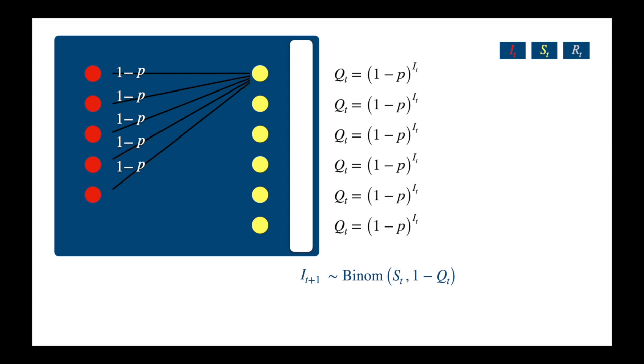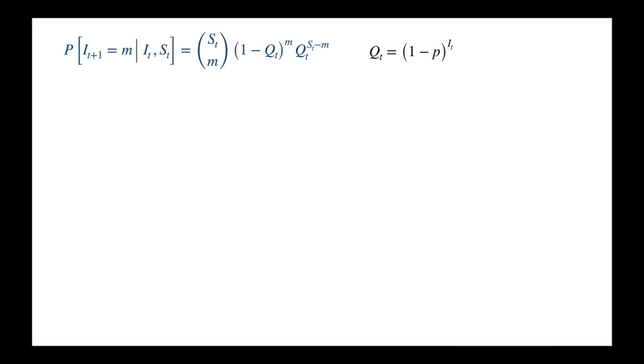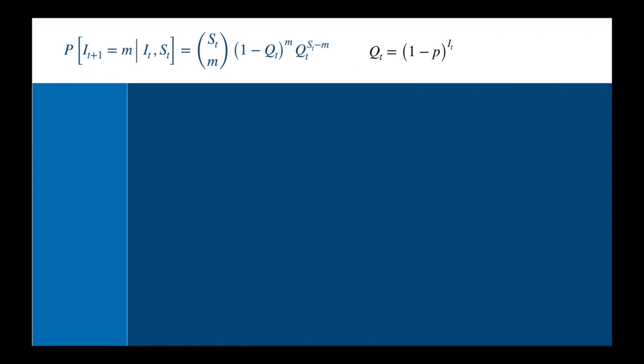So now we can use the binomial probability mass function to calculate the probability of the number of infectives taking any generic value, say m. So calculating the probabilities of the numbers changing from one round to the next is easy, but we want to be able to calculate the probabilities of the whole chain knowing the initial position. Let's say we start with I underscore 0 infectives, and S underscore 0 susceptibles. So the probability of the next round is easy, we just replace T by 0, and T plus 1 by 1 in our formula.